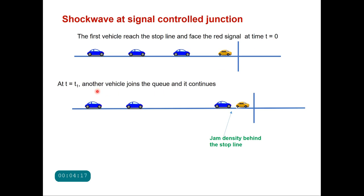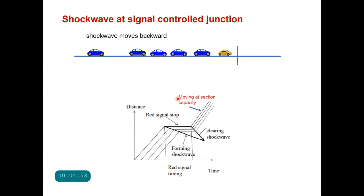At t equals t1, another vehicle will join this queue, and vehicles will continue to join the queue and a platoon will be built up behind the stop line. Because these vehicles are standing behind the stop line, spacing will be minimum, and density will be equal to the jam density. The queue will grow behind the stop line and a shock wave will be generated.